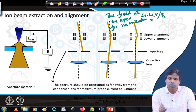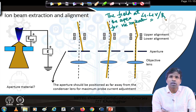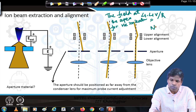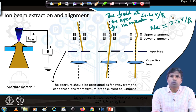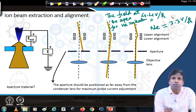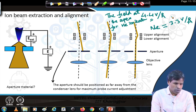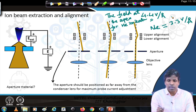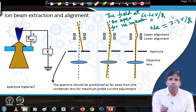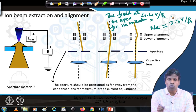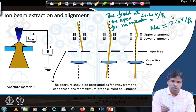The tip is sharpened first into a pyramidal shape and then a trimer is created by applying suitable potential to the extractor. Once a trimer is formed, the field at the trimer surface should be 4.4 volts per angstrom to efficiently ionize the helium atoms. For the case of neon, the field is supposed to be 3.3 volts per angstrom. A little higher voltage would evaporate stray atoms, forming a very well-defined trimer. Once the trimer is confirmed inside the microscope, the microscopy work begins.